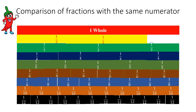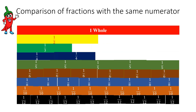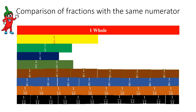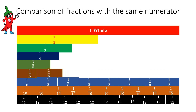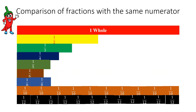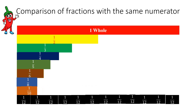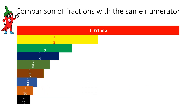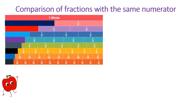I'm going to reduce each of the strips: this is 1/2, 1/3, 1/4, 1/5. 1/5 is smaller than 1/4; then 1/6, 1/8 is still smaller than 1/6; then 1/10, and last is 1/12. So 1/12 is the smallest. Comparison of fractions with the same numerator: when the numerators are the same, the fraction with the smaller denominator is greater.